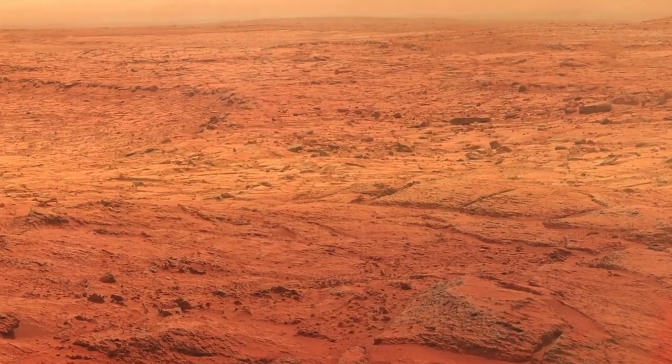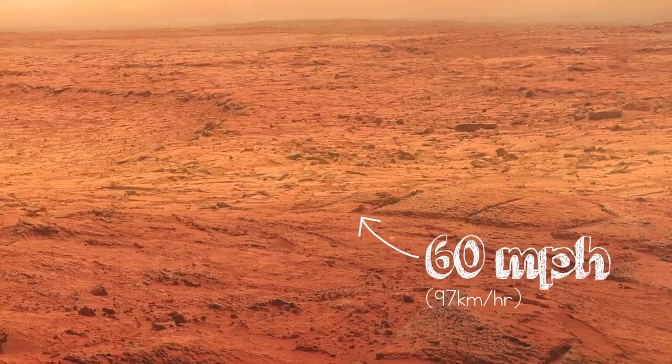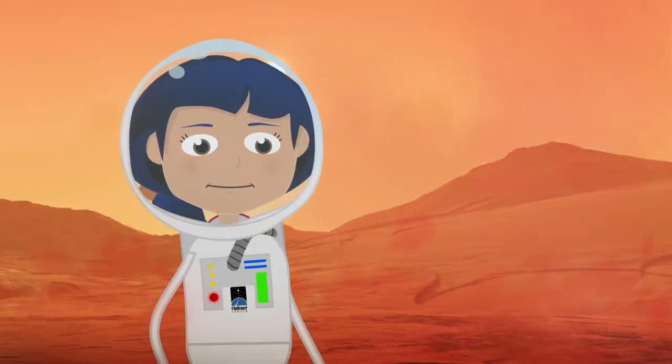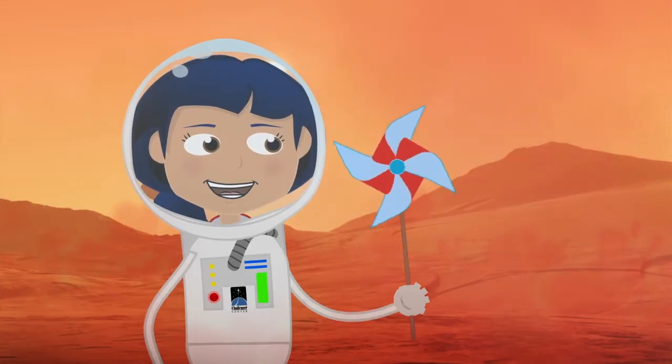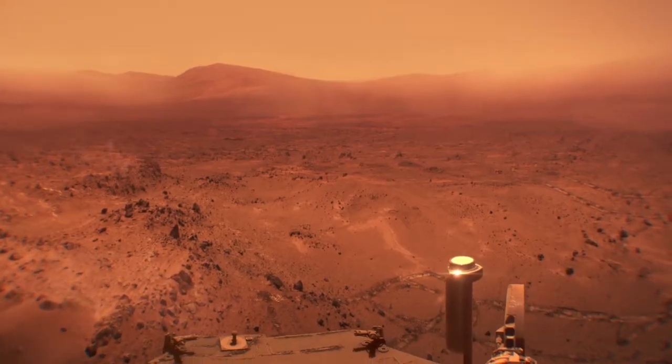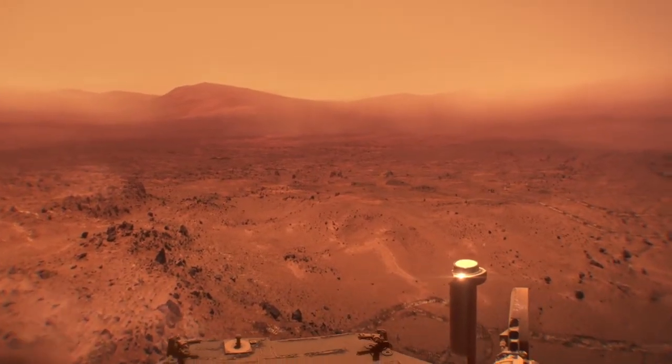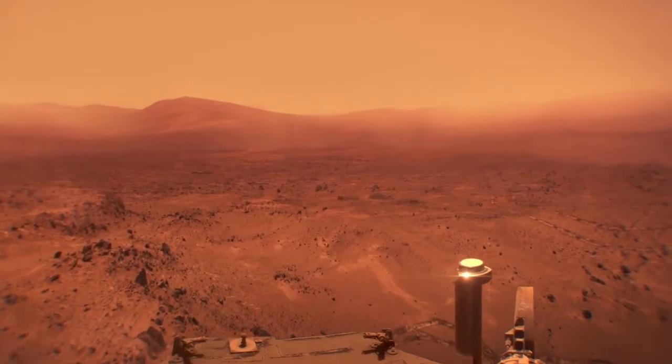With these storms, the winds max out at about 60 miles per hour. However, with the thin atmosphere on Mars, the wind only feels like a light breeze. Contrary to popular belief, the dust storms are mostly just disruptive to electrical equipment, rather than dangerous for humans.